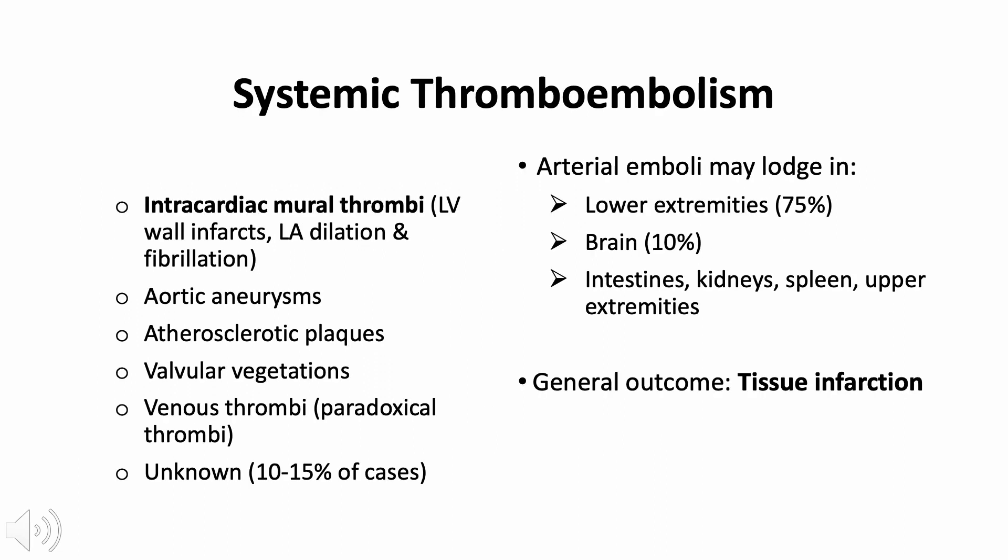In systemic thromboembolism, the most common origin is intracardiac mural thrombi (around 80%), mostly associated with left ventricular wall infarcts and some with left atrial dilation and fibrillation. Unlike venous emboli that lodge in the lung, arterial emboli lodge in tissues or organs perfused by the aorta downstream - most commonly in the lower extremities or the brain - with tissue infarction as the general outcome.